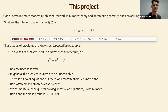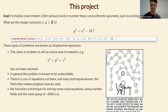For now we just do a couple of equations. We formalize a technique using number fields and the class group, which I'll define later. It's about six thousand lines of Lean code.